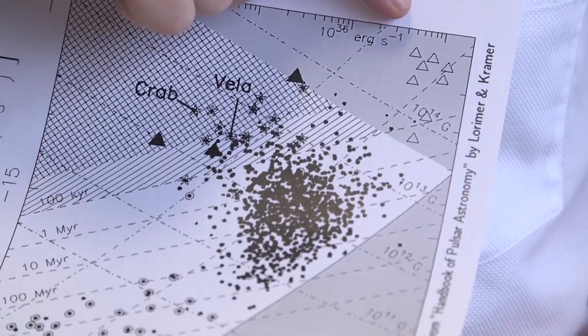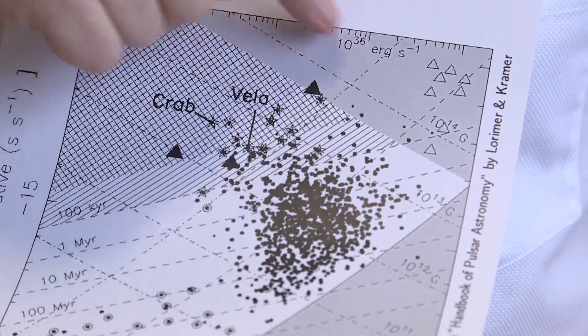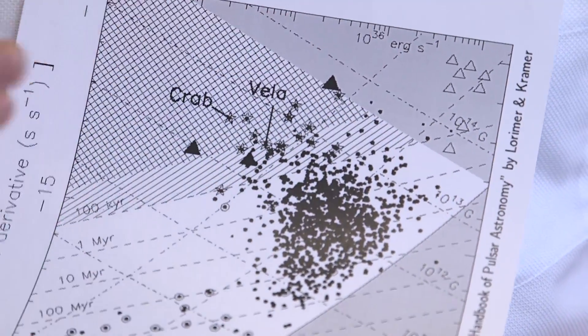Magnetars sit way up here. Although the spin periods are quite slow, they have crazily high magnetic fields. And no one knows why.